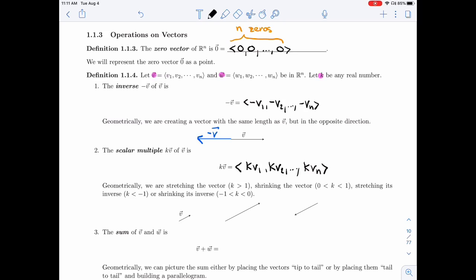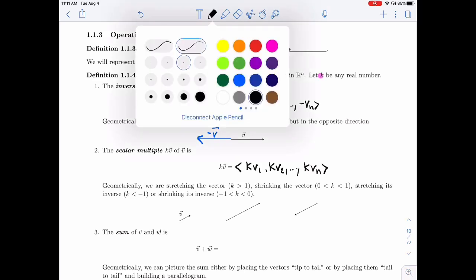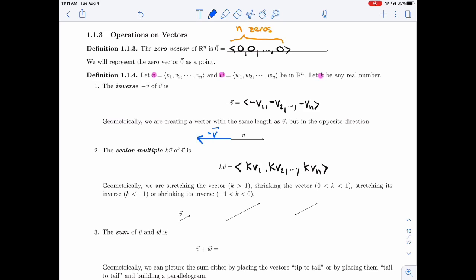For example, here, if I have K that's bigger than 1, I'm going to be stretching the vector. If it's between 0 and 1, I'm going to be shrinking it.